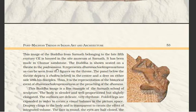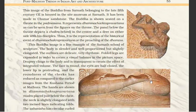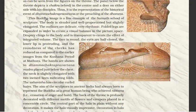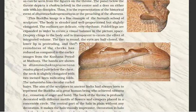The panel below the throne depicts a chakra, meaning a wheel, in the center, on either side with his disciples. The Buddha image is a fine example of the Sarnath school of sculpture. The body is slender and well-proportioned but slightly elongated. The outlines are delicate and rhythmic, and the folded legs are expanded to create visual balance. Drapery clings to the body and is transparent to create the effect of integrated volume. The face is round, the eyes are half-closed, the lower lip is protruding, and the roundness of the cheeks has reduced compared to the earlier images from the Kushana period at Mathura.